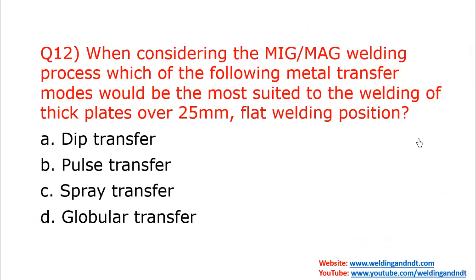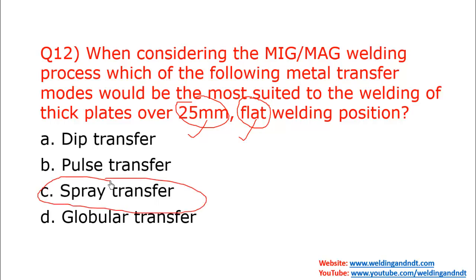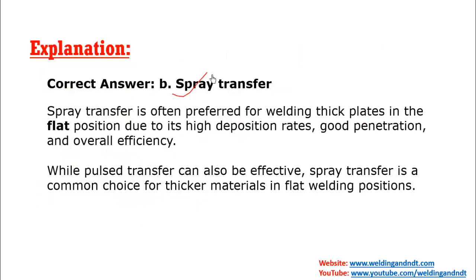Question number twelve, the last question: when considering MIG or MAG welding, which metal transfer mode is most suited to welding thick plates over 25 mm in a flat welding position? Options are dip transfer, pulse transfer, spray transfer, and globular transfer. Spray transfer is the most appropriate answer. Spray and pulse both work well for thick plates, but for flat position specifically, spray transfer is the most appropriate.